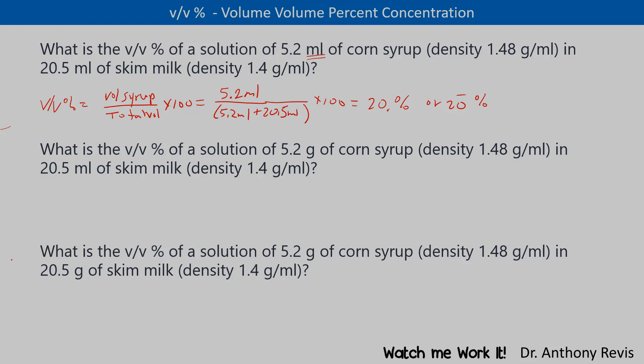So let's do another problem. What is the volume-volume percent of a solution of 5.2 grams of corn syrup, density 1.48 gram per mil, and 20.5 mils of skim milk having a density of 1.4 gram per mil.